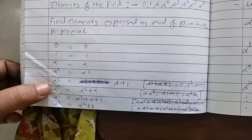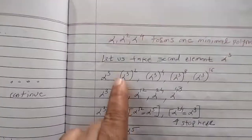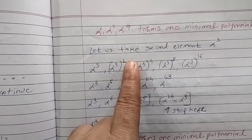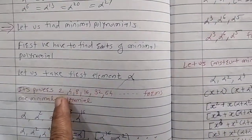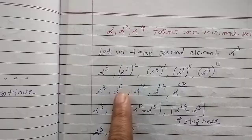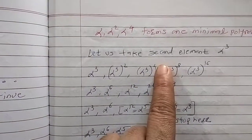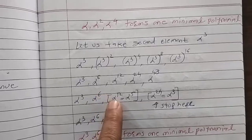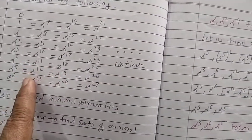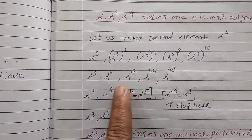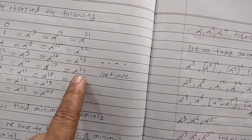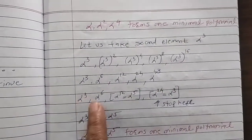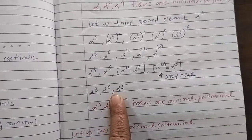Having covered α, α², α⁴, jump to α³ and find its conjugates. Raise α³ to powers of 2: α³, α⁶ (3×2=6), α¹² (3×4=12), α²⁴ (3×8=24). Now α¹² = α⁵ and α²⁴ = α³, so it is repeating — stop here. The three roots of the next minimal polynomial are α³, α⁶, α⁵.